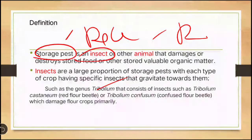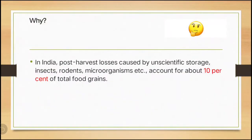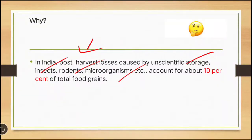Next, we'll see why there is a need to study about storage insects. In India, post-harvest losses are caused by unscientific storage, insects, rodents, microorganisms, etc. Post-harvest losses occur because farmers and many people are storing products in an unscientific way, and insects, rodents, and microorganisms are attacking. About 10 percent of the total food grain is lost due to post-harvest losses.